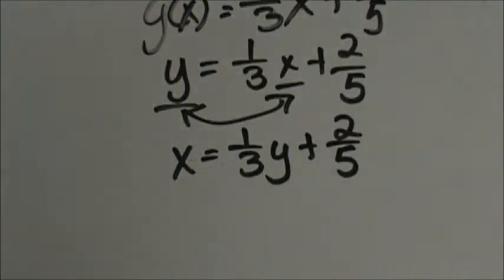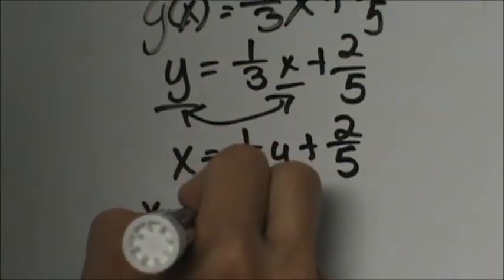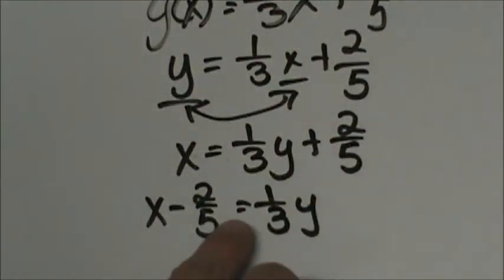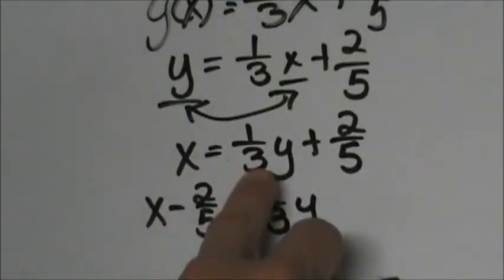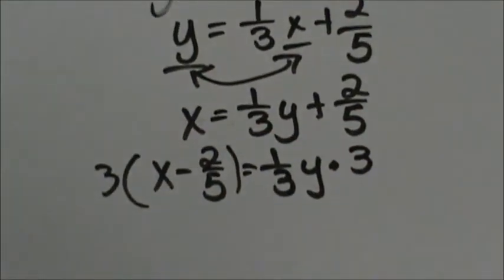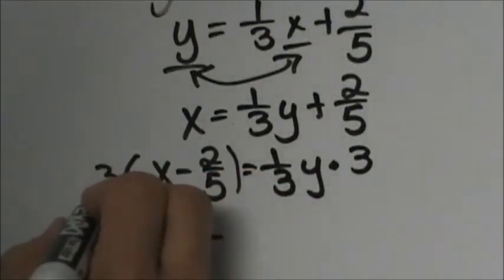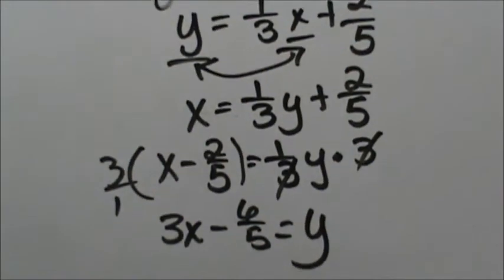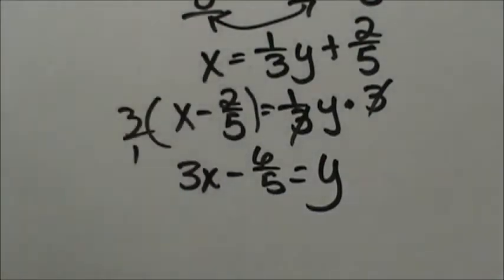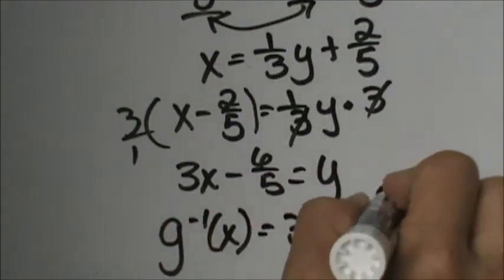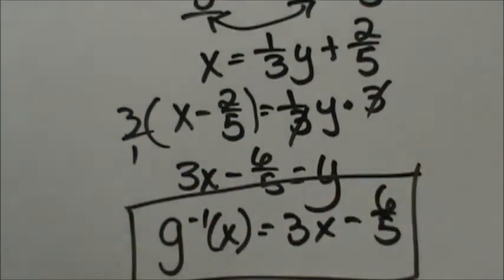Now we simply solve for y. Get y by itself by subtracting two fifths from both sides — I'll use transposing, so that two fifths moves over and becomes negative two fifths. Then multiply both sides by 3 to get rid of the one third. The final answer is 3x minus six fifths equals y. So we write g⁻¹(x) equals 3x minus six fifths. That's how you undo a linear function that has fractions in it.